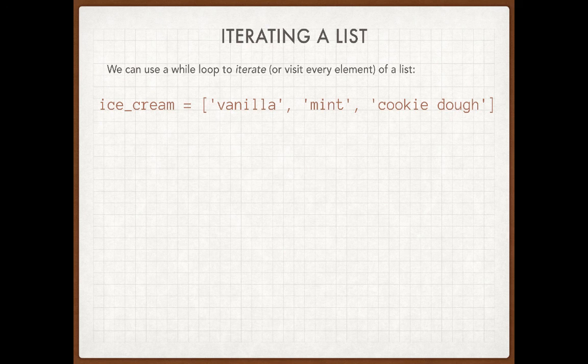We know how that list is going to get arranged. It starts with index 0, then goes to index 1, and then to index 2. When I do this with a list, we often say that I am iterating the list, or this is an iteration. The concept of iterating means exactly this — I'm going to write a loop that visits every element in a list.